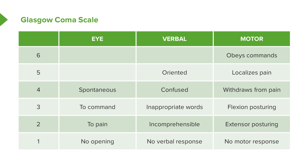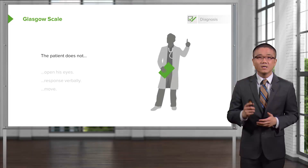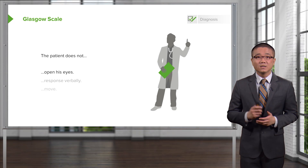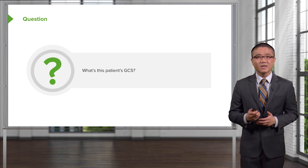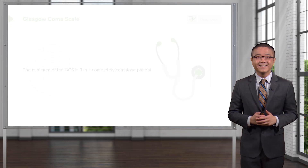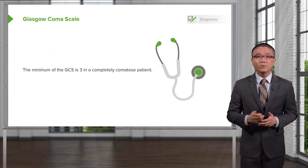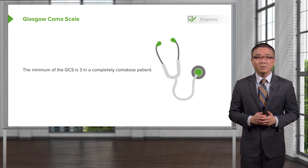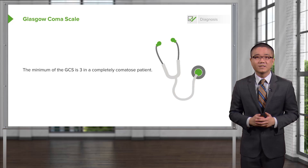It's important to remember that you just have to spend a few minutes looking at this slide and memorizing. Unfortunately, I don't have any simple ways of memorizing the GCS EVM scoring. The patient does not open his eyes, respond verbally, or move. What is this patient's Glasgow Coma Scale? This is a common trick question — the minimum GCS is three because the lowest score is one on a one-to-six scale. So the minimum GCS score is three in this completely comatose patient.